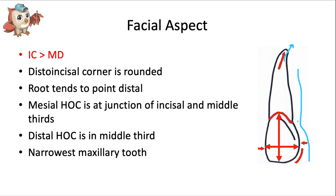The cervical line is convex toward the root apex on both the facial and lingual aspects. The mesial height of contour is more incisal on the crown than the distal height of contour. The mesial height of contour is at the junction of the incisal and middle thirds of the crown, and the distal height of contour is in the middle third of the crown — those height of contours and proximal contacts creep closer to the gum line as we go posteriorly around the arch. Also, it's the most narrow tooth mesiodistally in the entire maxillary arch.